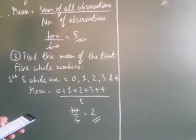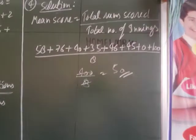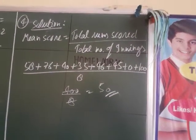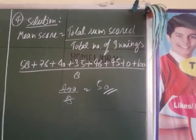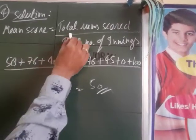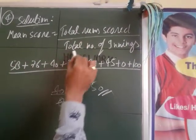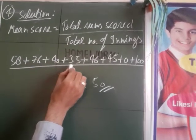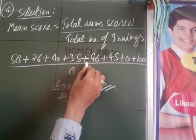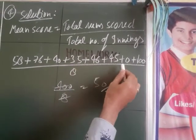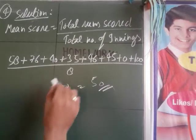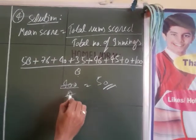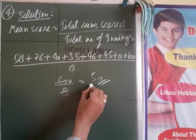Fourth question: a cricketer scores the following runs in 8 innings. Find the mean score. Mean score = total runs scored divided by total number of innings = (58+76+40+35+46+45+0+100) divided by 8 = 400 divided by 8 = 50.